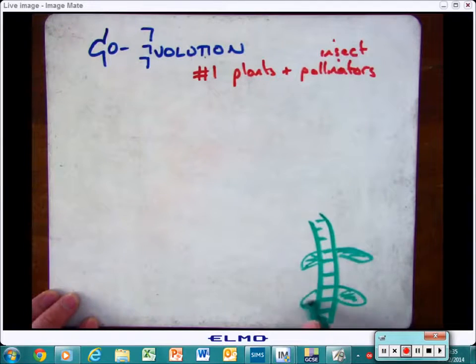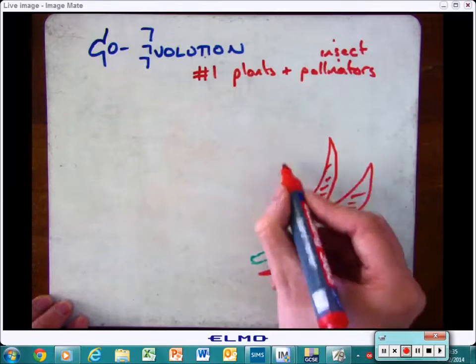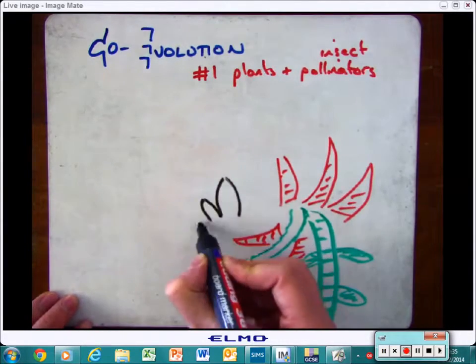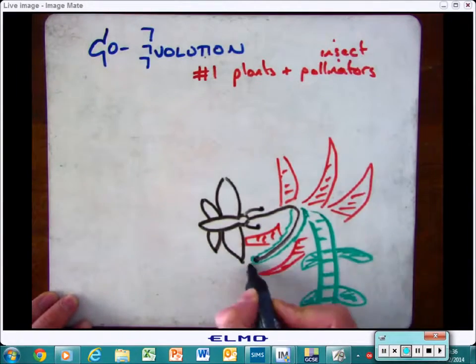Now the example that you need to know for the exam is how the orchid and the moth have both co-evolved to adapt to each other. For an insect then it would be an advantage if it was the only thing that could pollinate a plant because it would be the only thing that would be getting that nectar.